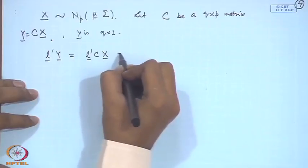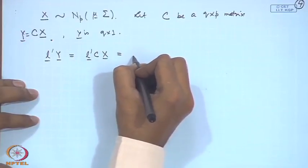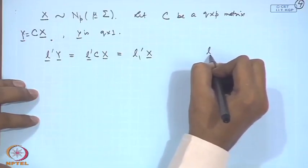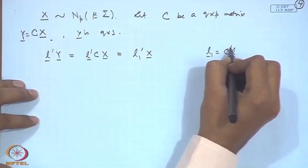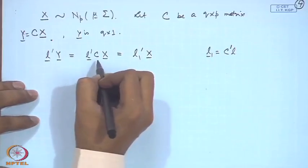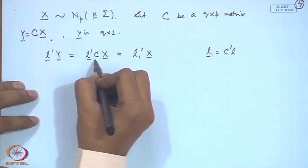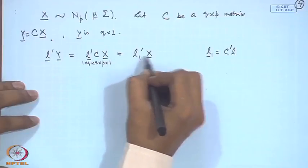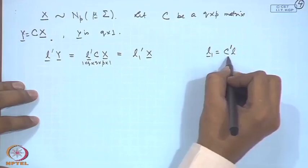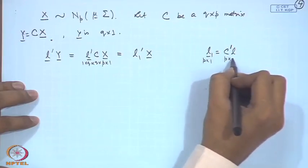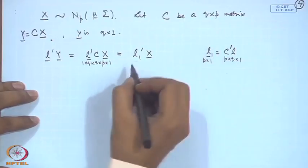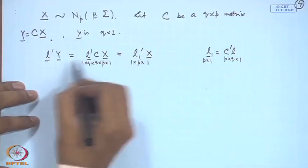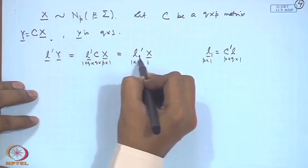Checking dimensions: l is 1 by q, C is q by p, x is p by 1. So l_1 = C'l is p by 1, and l_1'x is a scalar — a linear combination of components of x. Since x follows Np(mu, sigma), any linear combination l_1'x has a univariate normal distribution.